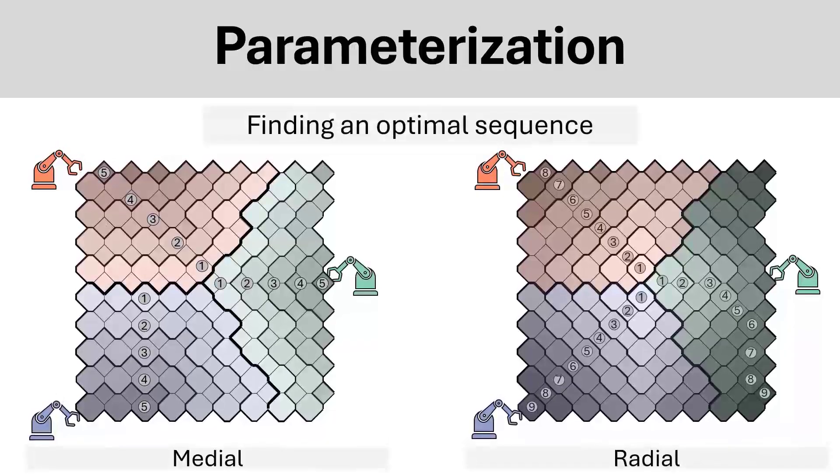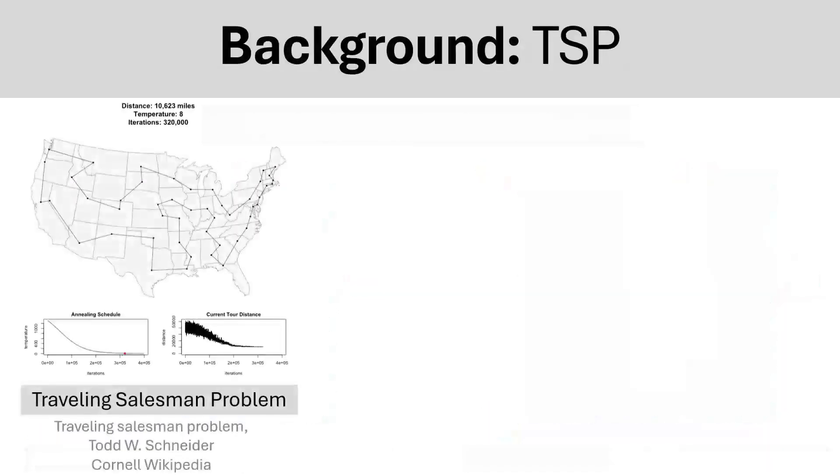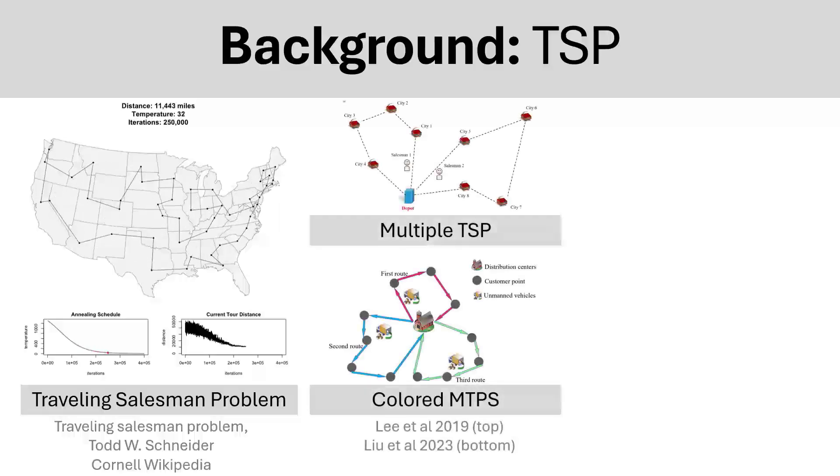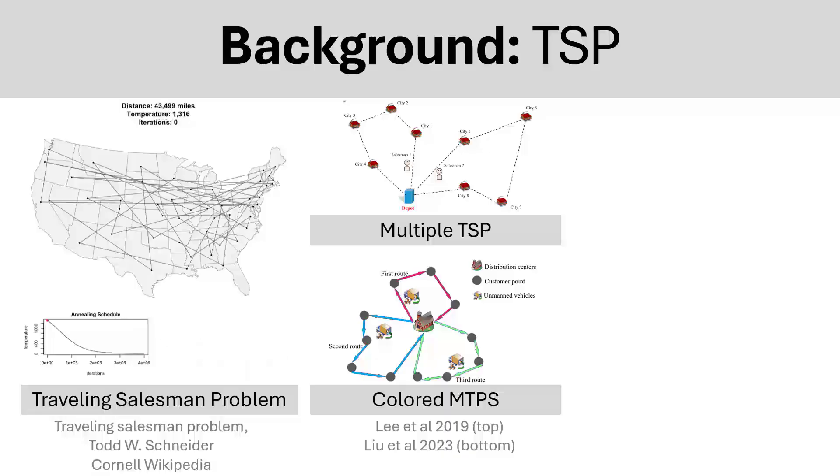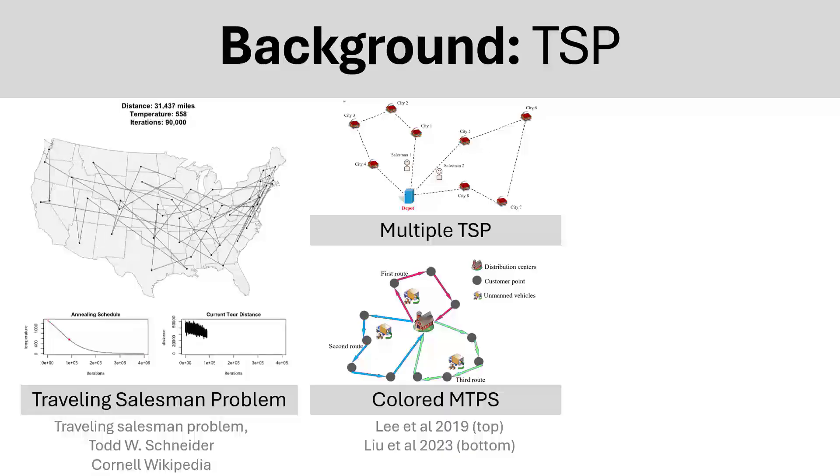This question of how to sequence printing is very closely related to the traveling salesman problem, where a salesman must traverse some cities and minimize the total travel distance. Other variations exist with multiple traveling salesmen, which must optimize their own routes simultaneously. In our case, the salesman can be reinterpreted as robots traversing their tasks.